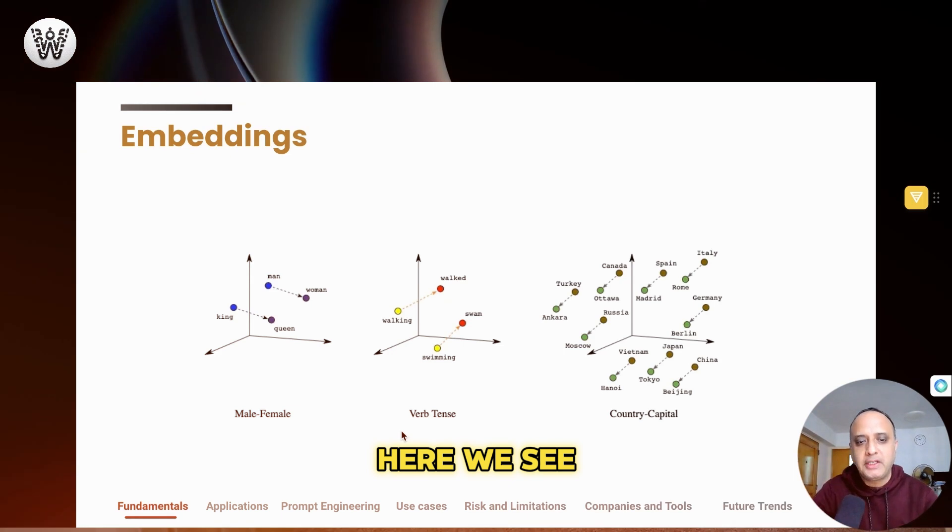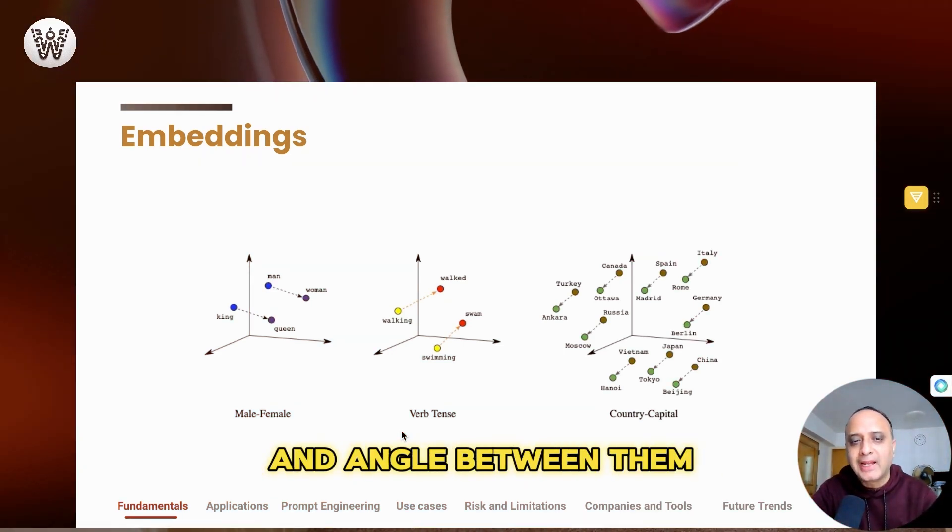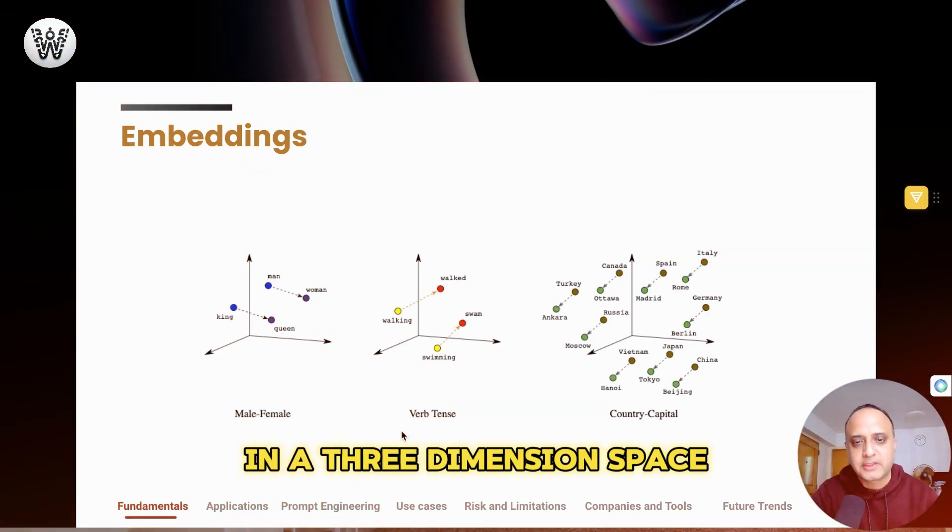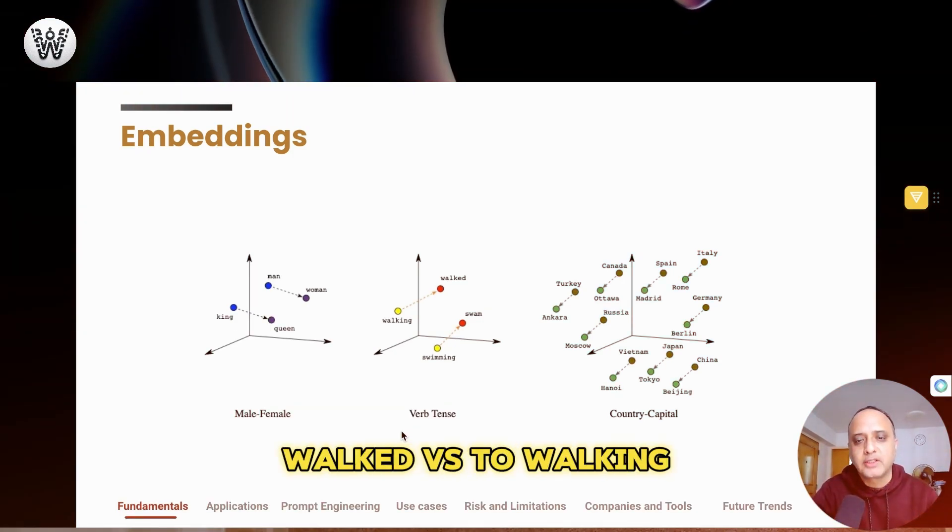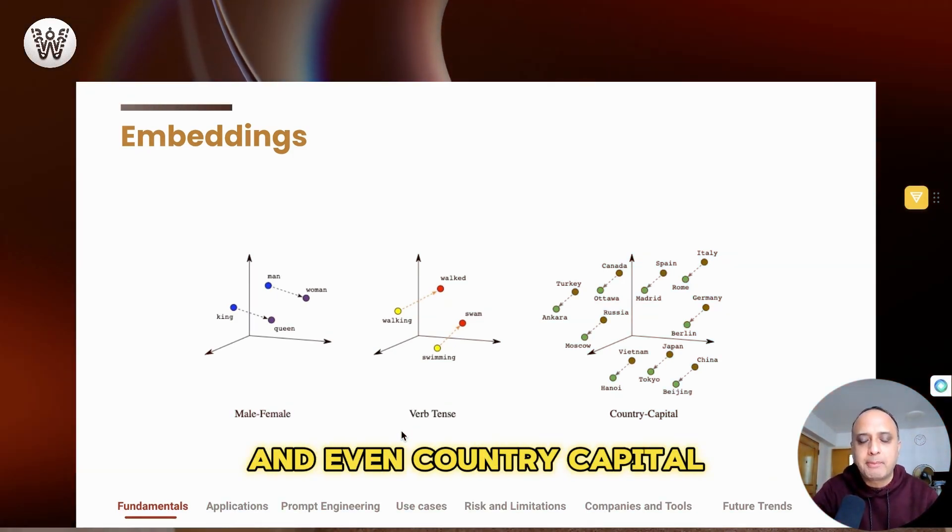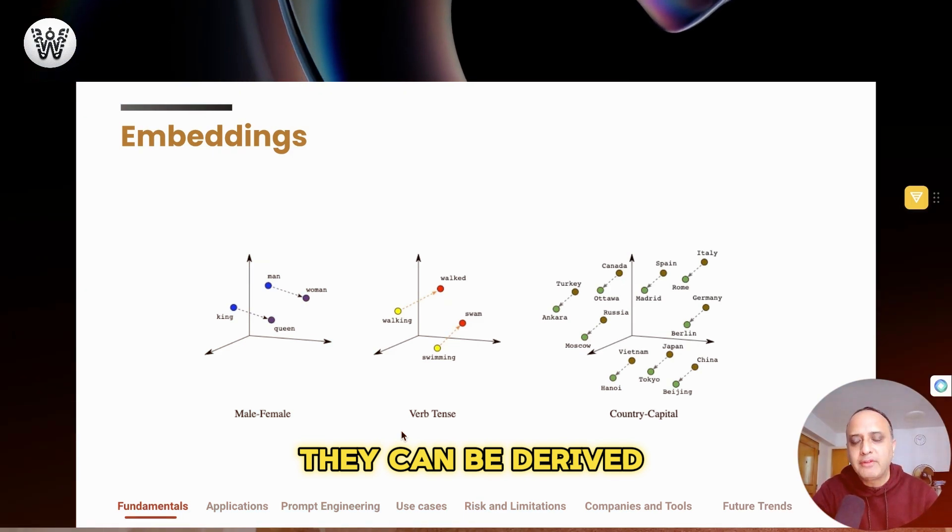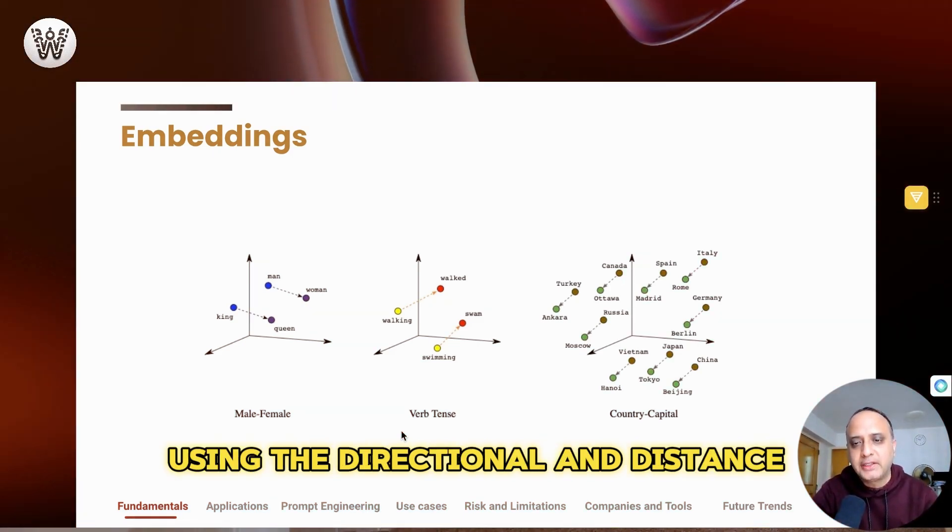So for example, here we see male and female have a consistent distance and angle between them in a three-dimensional space represented here in two dimensions. Similarly, verbs, walked versus walking, swan versus swimming, and even country capital, they can be derived using the directional and distance property of vectors.